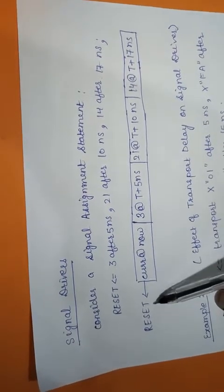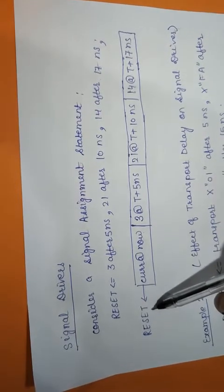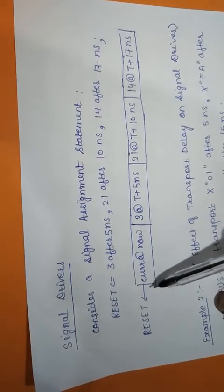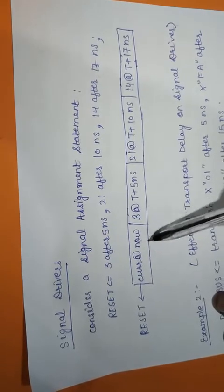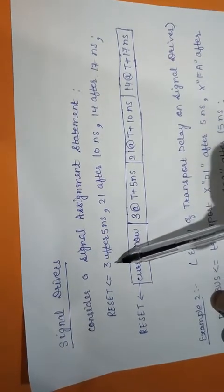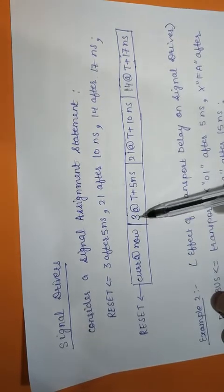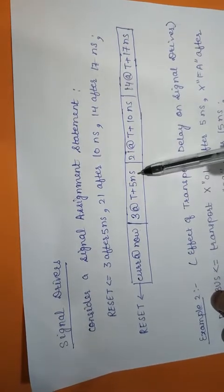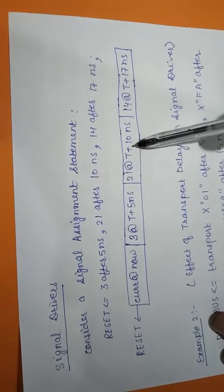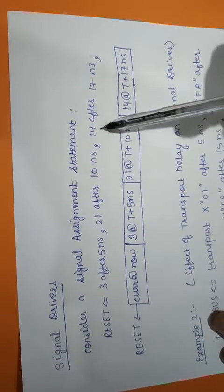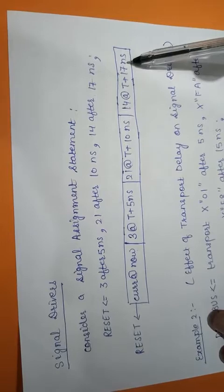Whenever we initialize or start using reset as output, it will be consisting of its current value at now, then the value 3 at T plus 5 nanoseconds, 21 at T plus 10 nanoseconds, then 14 at T plus 17 nanoseconds.